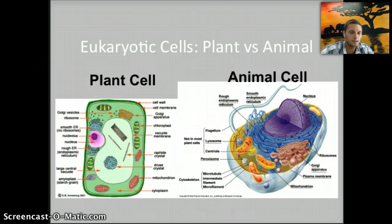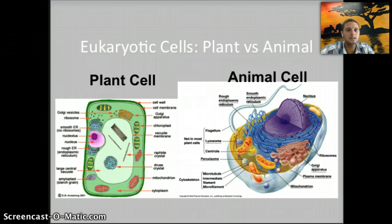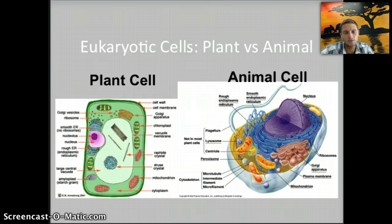Eukaryotic cells can be found as either plant or animal cells, and they definitely have some differences. One of the most pronounced differences is the shape of these cells. Plant cells have cell walls, and as a result they have a very rigid outer structure. Animal cells are a more rounded shape — they don't have a cell wall, so they're able to move or change shape slightly, making them more flexible. As a result, they're usually more rounded or oval shaped.